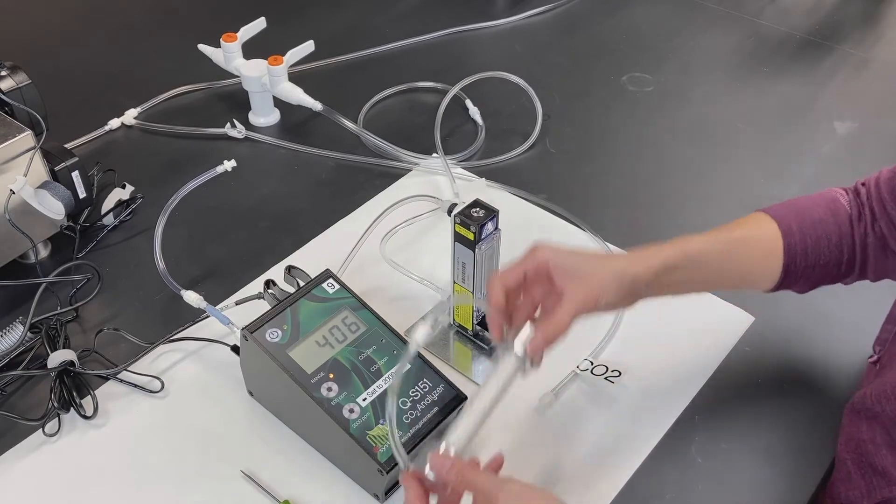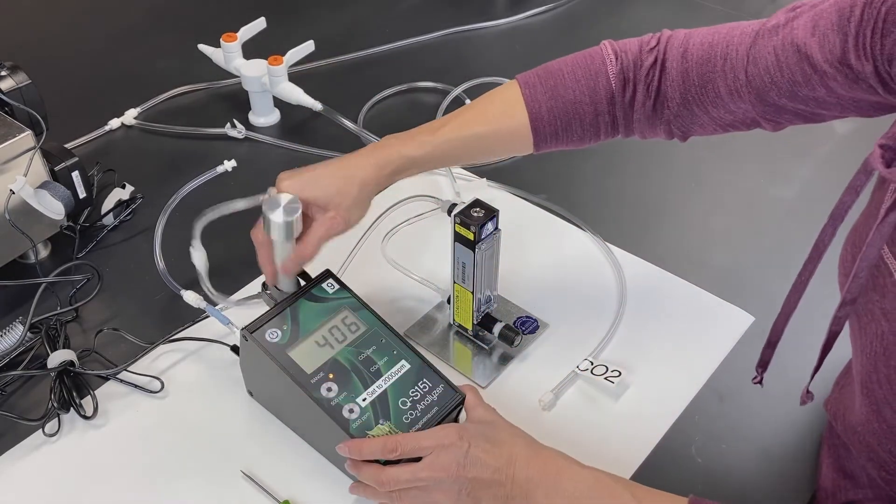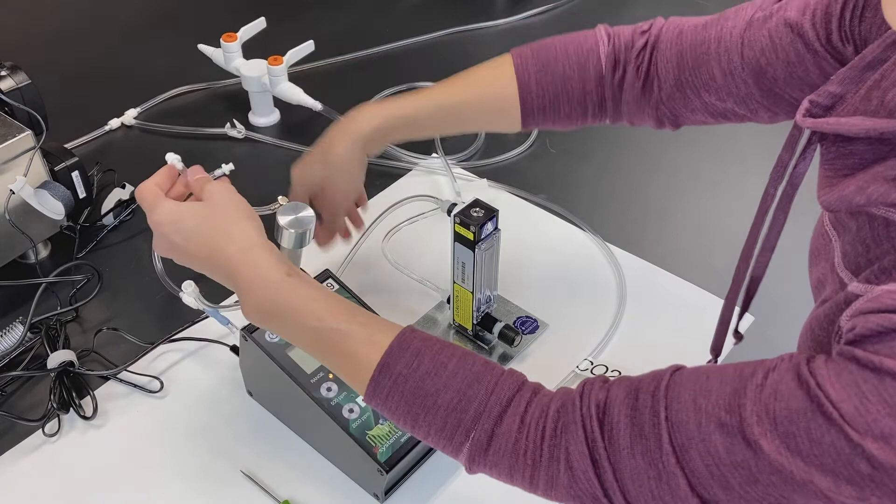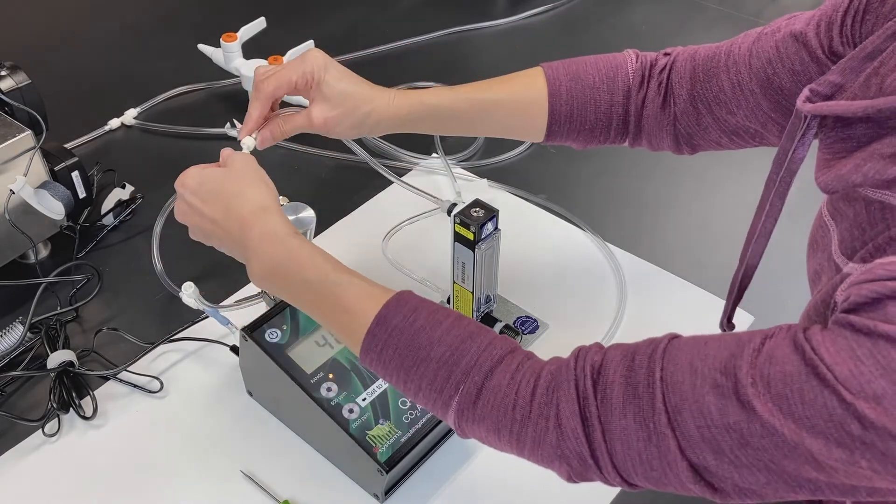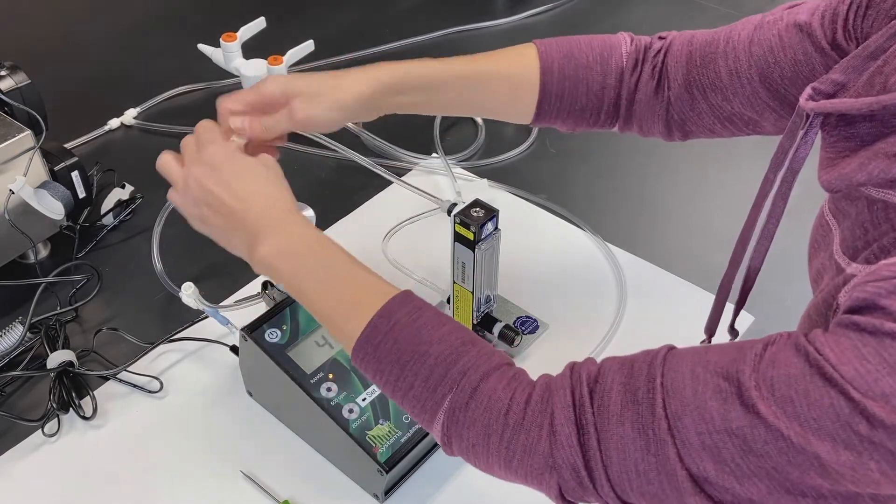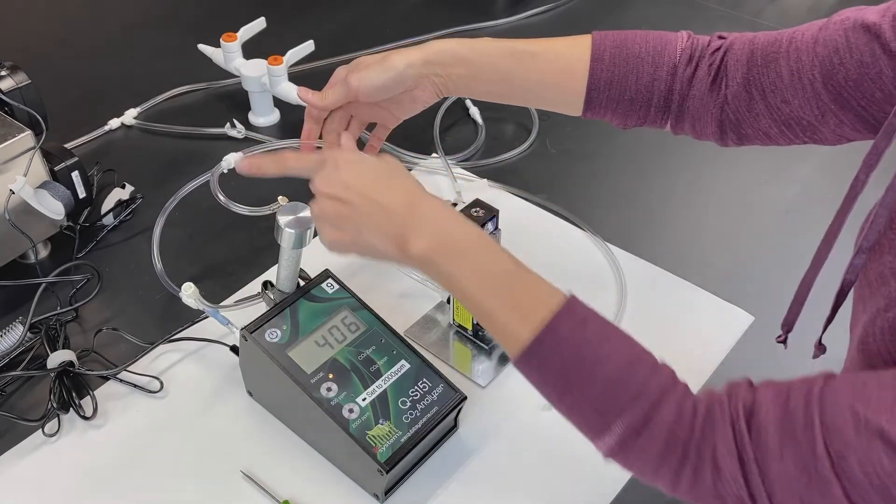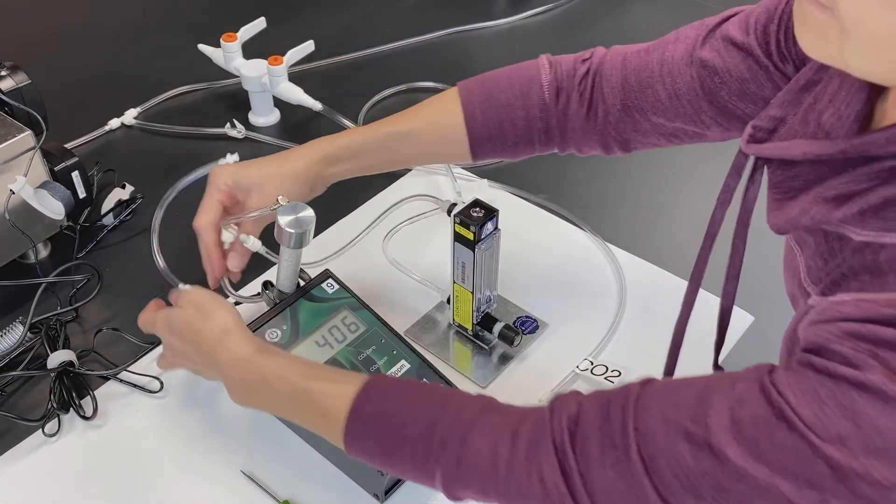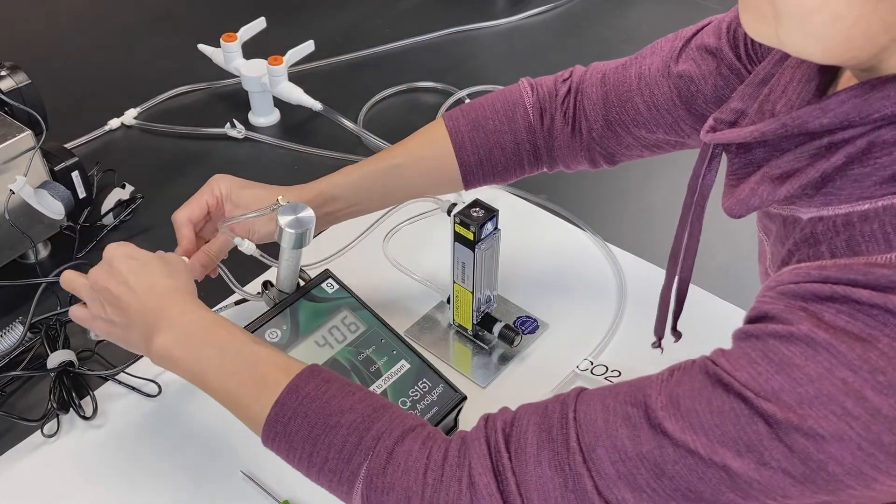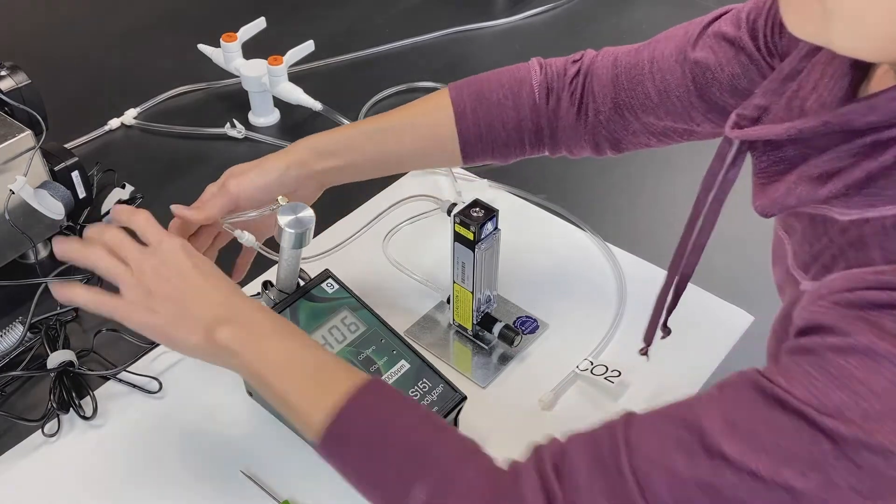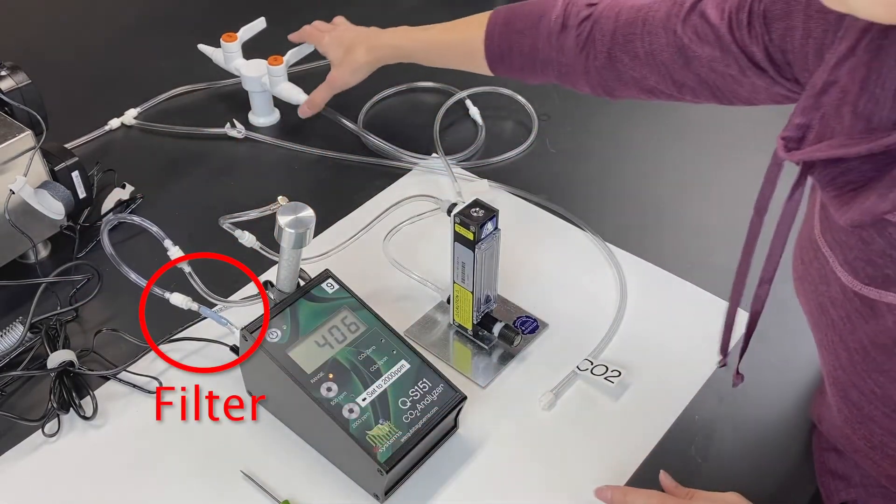Next, attach a carbon dioxide scrubbing column. This is filled with soda lime and will remove all the carbon dioxide from the air. Attach the outflow from the flow meter to one end of the scrubbing column and the other end to the CO2 gas analyzer. Use an inline filter to prevent dust from entering the gas analyzer.